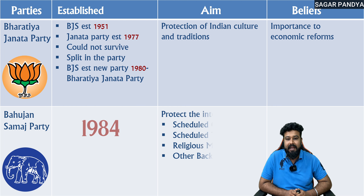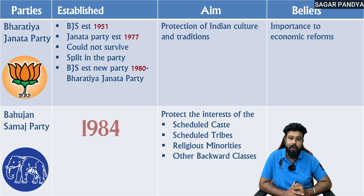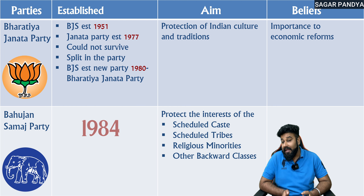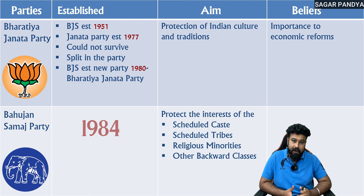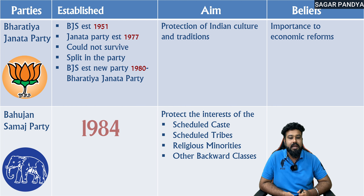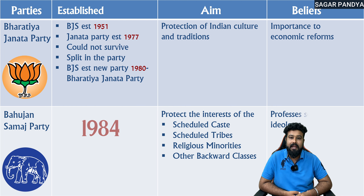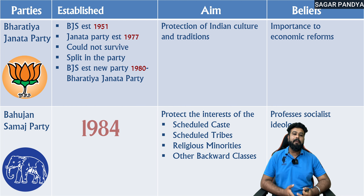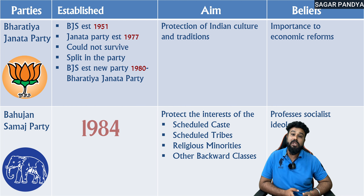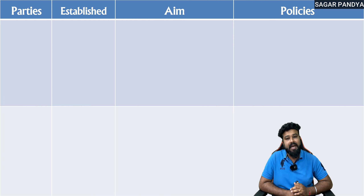Bahujan Samaj Party was formed in 1984. Its main interest is protection of the interests of Schedule Castes, Schedule Tribes, religious minorities, and Other Backward Classes. They profess socialist ideology — that is, government control.